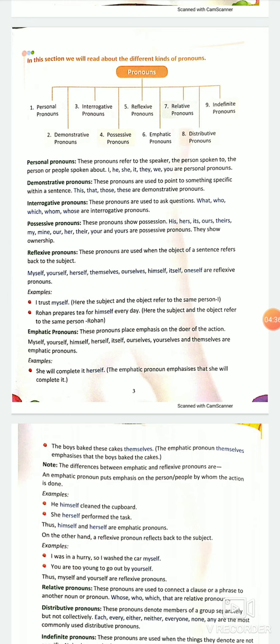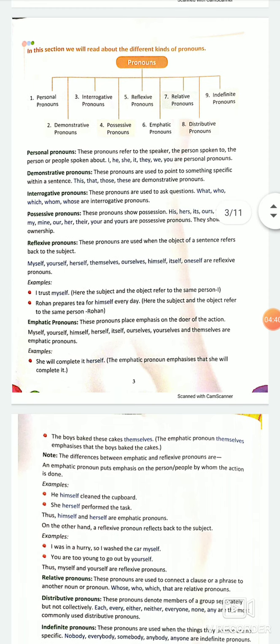We have nine different kinds of pronouns which we have done in the previous class. Let's revise them. Personal pronouns refer to first person, second person, and third person. Means the speaker, the person spoken to, and the person spoken about. I am talking to you about him.